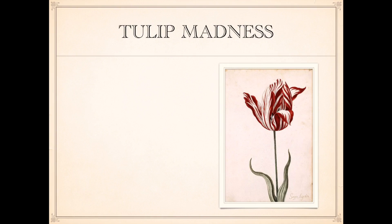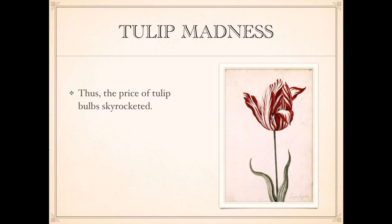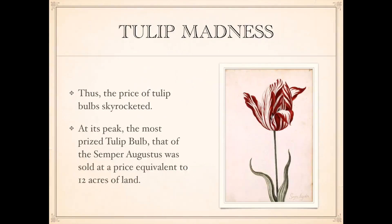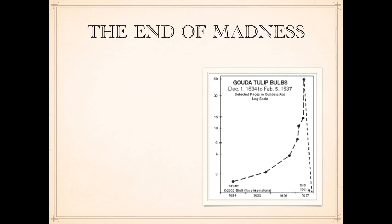This flower here — called Semper Augustus — looks very unique. The price of tulip bulbs skyrocketed; so many people wanted them. At this peak, the most expensive tulip bulb, the most precious one — Semper Augustus — was sold at a price equivalent to 12 acres of land. Even though the price of land was expensive, this is 12 acres of land for one flower.